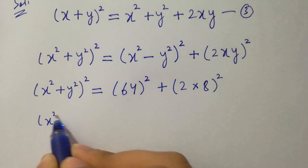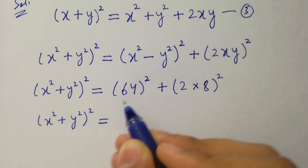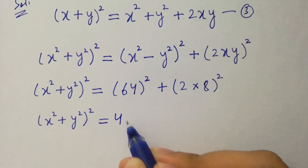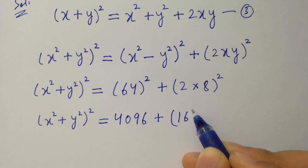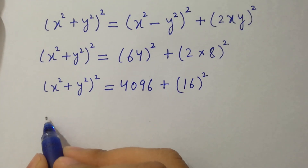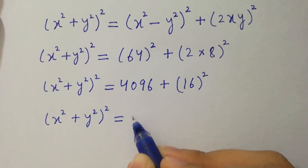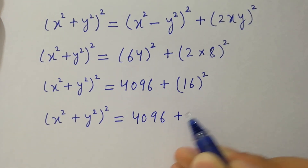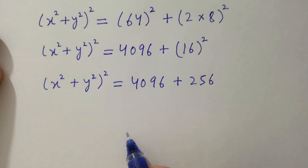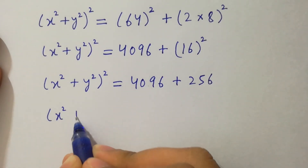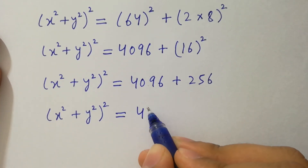So x squared plus y squared, whole squared, equals 64 squared plus 2 times 8, whole squared. That gives us 4096 plus 2 times 16, which is 256. Adding them, we get x squared plus y squared whole squared equals 4352.